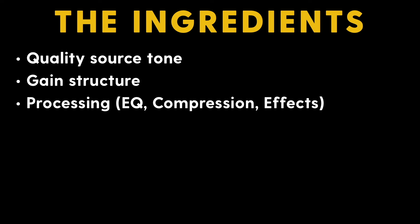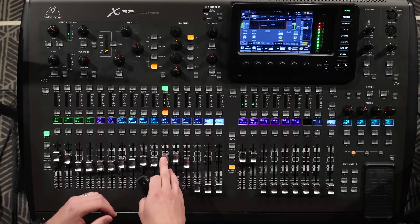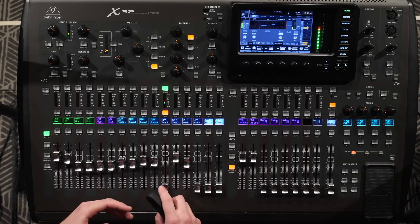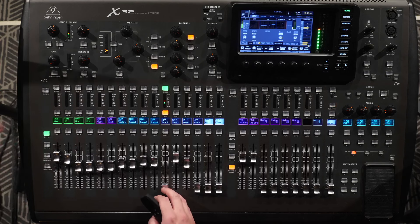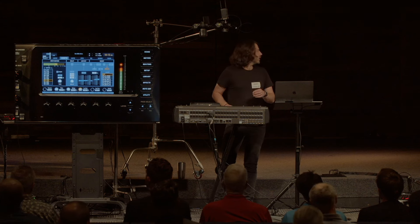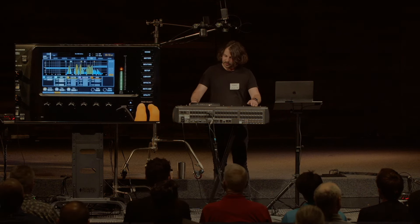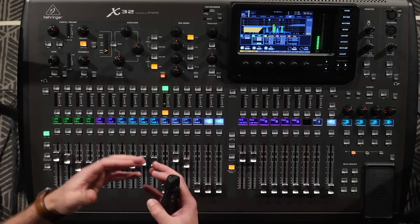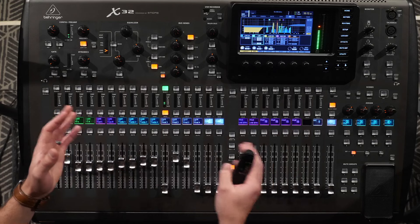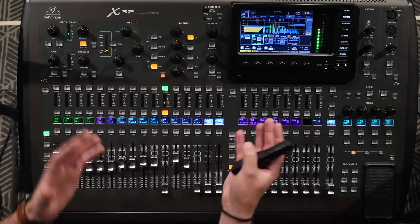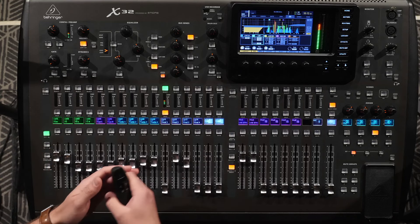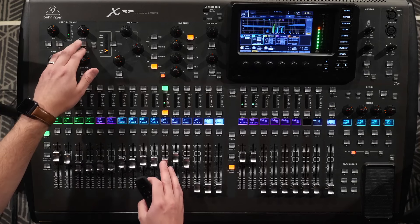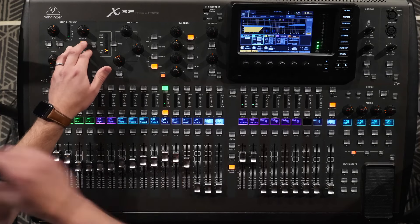We're going to talk about the actual processing next. We can listen to this vocal and turn off the processing, then talk about exactly what's happening. We've got our raw signal here — it's captured pretty well, but it still has some work to do. We've already got our gain structure. The next thing is our low cut. You can see that cutting out a lot of that low end cleans up the signal a lot. On every channel you should have a low cut — it's just a matter of how far up it goes depending on the instrument.